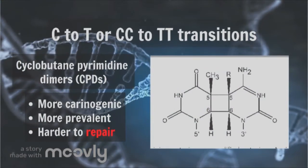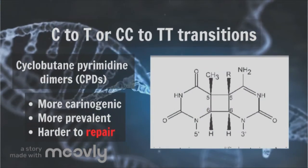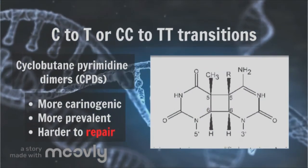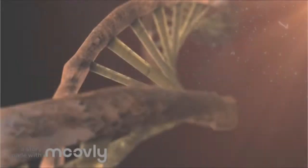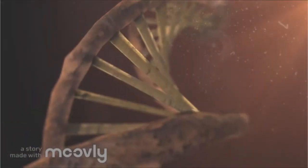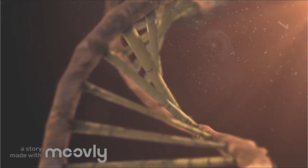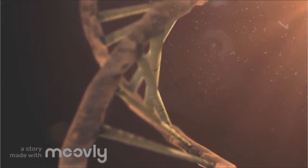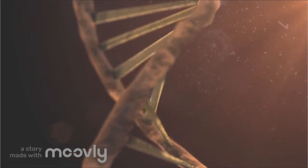However, CPDs are considered to be more carcinogenic as they are much more prevalent and less efficiently repaired in comparison to 6,4-PPs. Overall, if left unrepaired, these dimers become mutagenic. This highlights the important role of the DNA repair system in skin carcinogenesis.